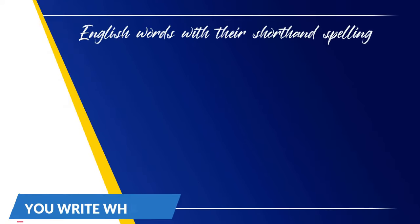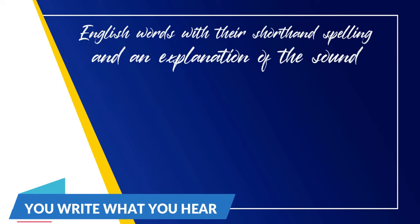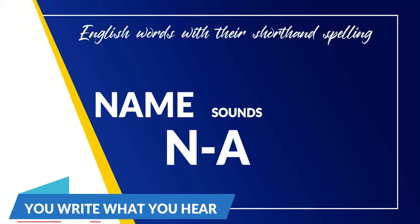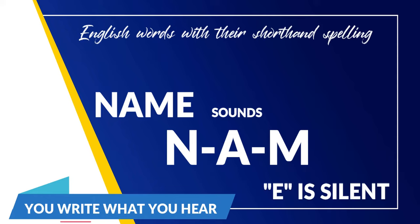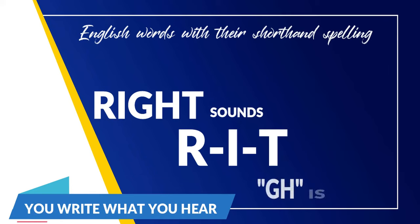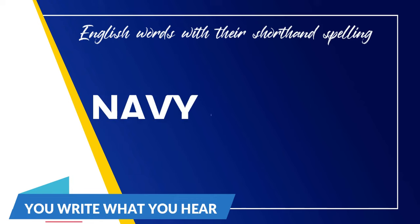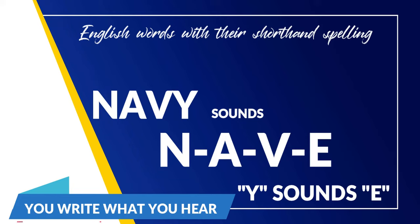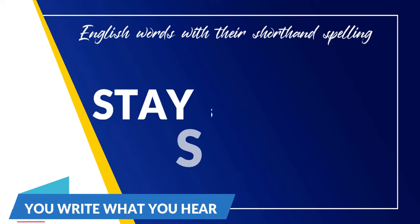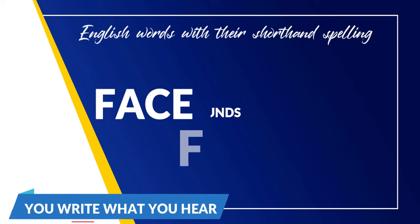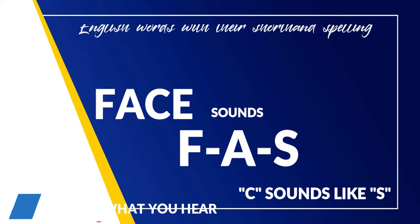The following are examples of English words with their shorthand spelling and an explanation of the sounds. For example, the word 'name' sounds as N-A-M, since the E is silent. Next, 'right' is R-I-T, as GH is silent. 'Navy' sounds as N-A-V-E, since Y sounds like E. 'Stay' is S-T-A, since Y is silent. And 'face' sounds as F-A-S, since the C sounds like an S.